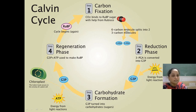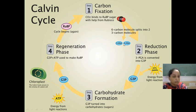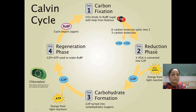So this 6-carbon molecule splits into two 3-carbon molecules. The 5-carbon RUBP plus 1 carbon from atmospheric CO2 forms a 6-carbon compound, and this 6-carbon compound splits into two 3-carbon compounds — basically 2 molecules. This process is known as carbon fixation. After this, there is a process termed the reduction phase.